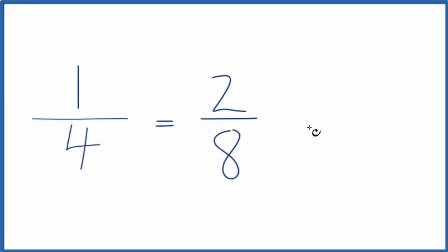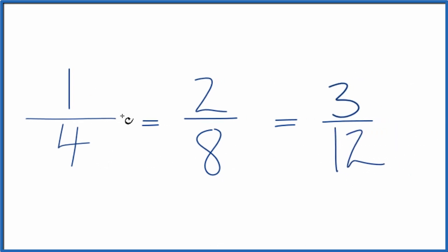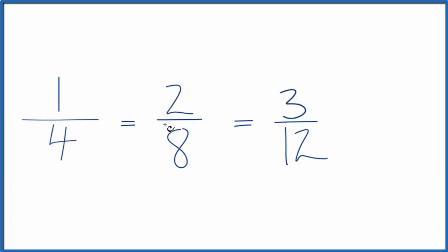Let's multiply the numerator and denominator by three. One times three is three. Four times three is twelve. Another equivalent fraction for one-fourth. How about we multiply the numerator and denominator by four? One times four is four, and four times four is sixteen.